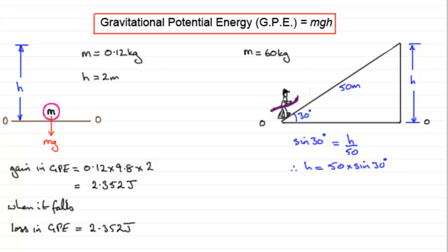So as our person here moves up the hill carrying their toboggan, their gain in gravitational potential energy is given by MGH being 60 multiplied by G, 9.8 times H, which is 50 multiplied by the sine of 30 degrees. And that comes out at 14,700 joules. Because this is such a big number, you could actually write this in kilojoules. 1,000 joules make a kilojoule. So this would be 14.7 kilojoules.